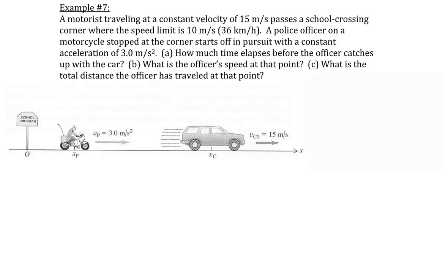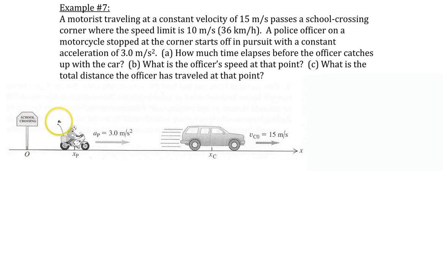Welcome to example number seven. In this question we have a motorist, which is the car that you can see in the diagram below. This motorist is traveling at a constant velocity of 15 meters per second, but passes a school crossing where the speed limit is actually 10 meters per second — hence he's speeding.